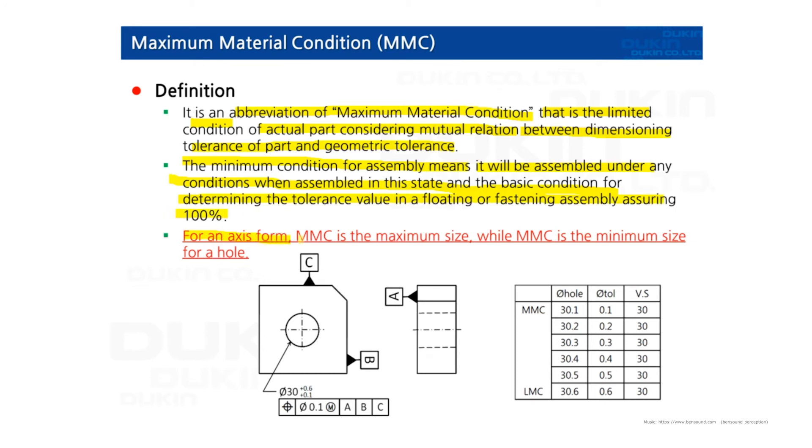For an axis form, MMC is the maximum size. But for a hole, MMC is the minimum size.